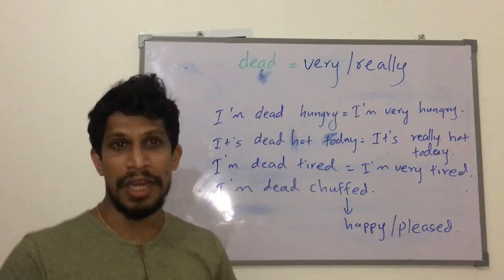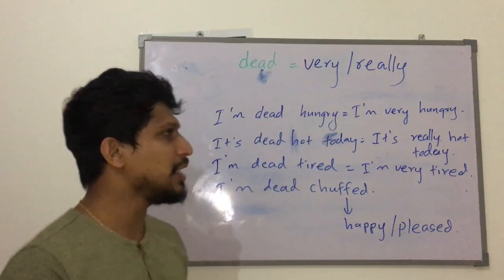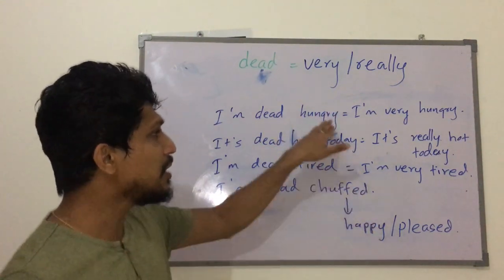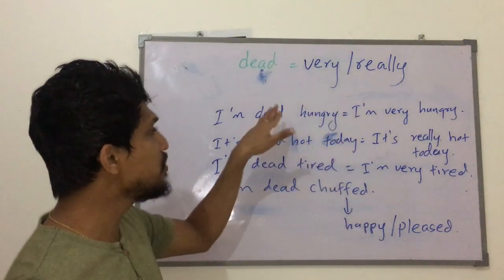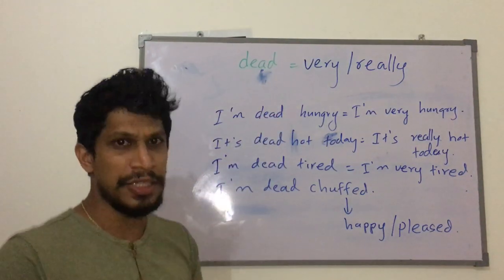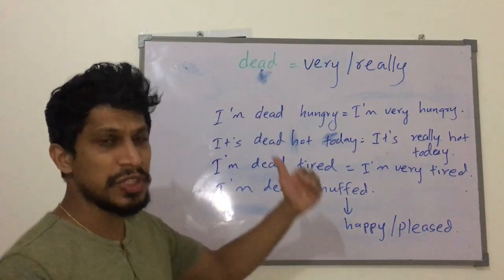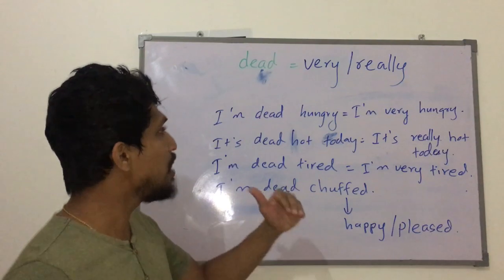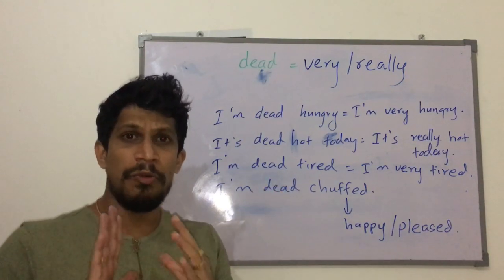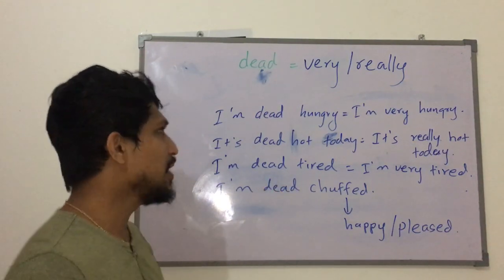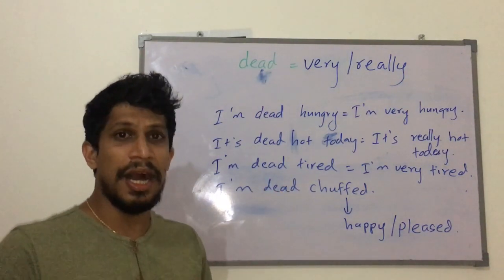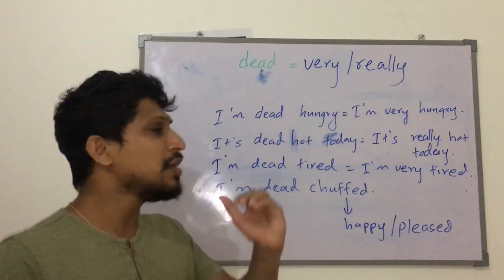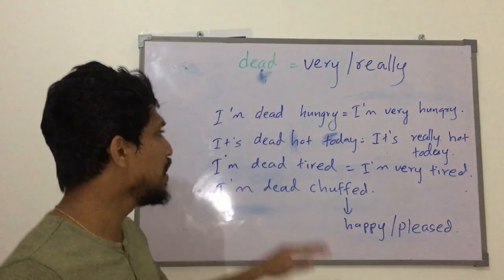Look at the first example: I am dead hungry. Here, hungry is an adjective. I have used the word dead before the adjective. I am dead hungry means I am very hungry. We can say I am dead hungry instead of saying I am really hungry or I am very hungry.